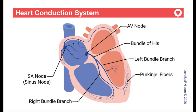The impulse then travels to the AV node, where there is a delay to allow the blood in the atria to empty into the ventricles. Then from the AV node, the impulse travels to the bundle of His, then the left and right bundle branches, and then through the Purkinje fibers. Ultimately, this causes depolarization of the myocardium, which triggers contraction of the ventricles.